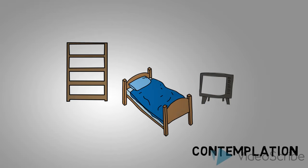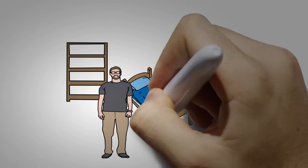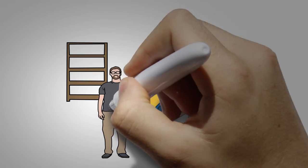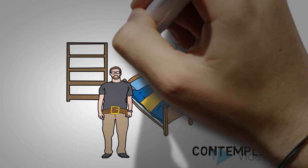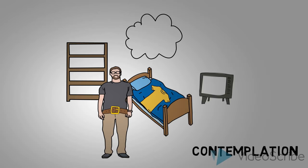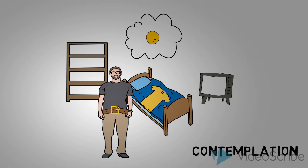Now that he has some small amount of awareness, he has progressed to the contemplation stage, where he begins to look more closely at his behavior. He notices that some of his clothes are not fitting like they used to. The process of change that might affect him now is dramatic relief, where he begins to have anxiety due to his unhealthy behavior.